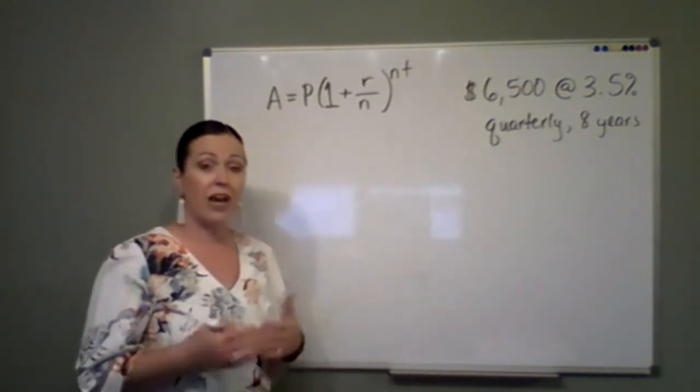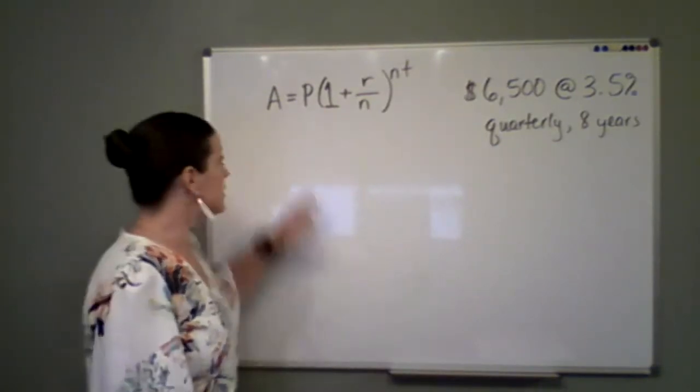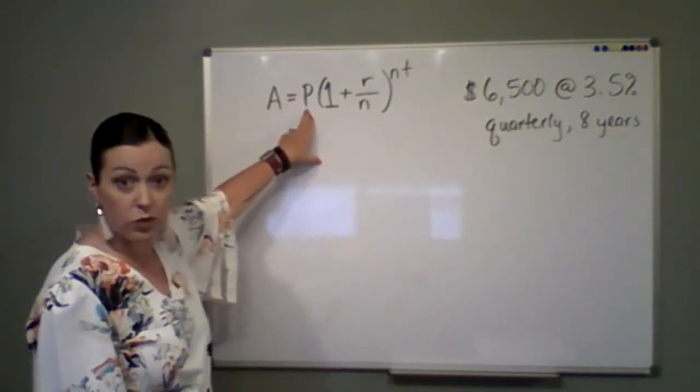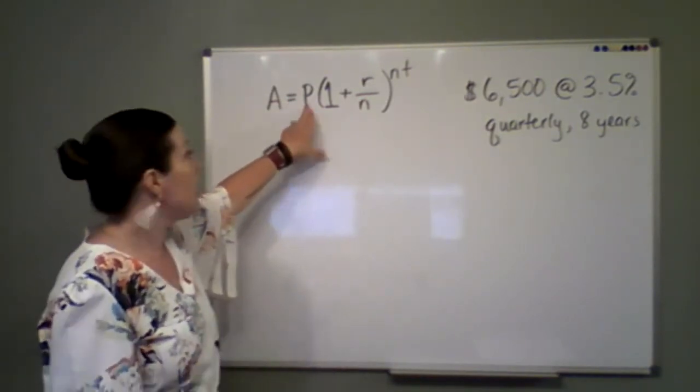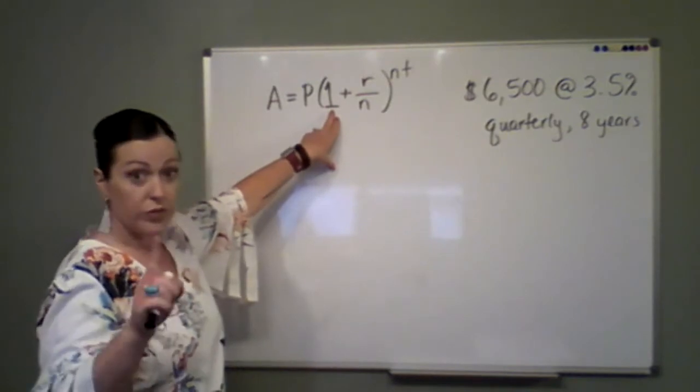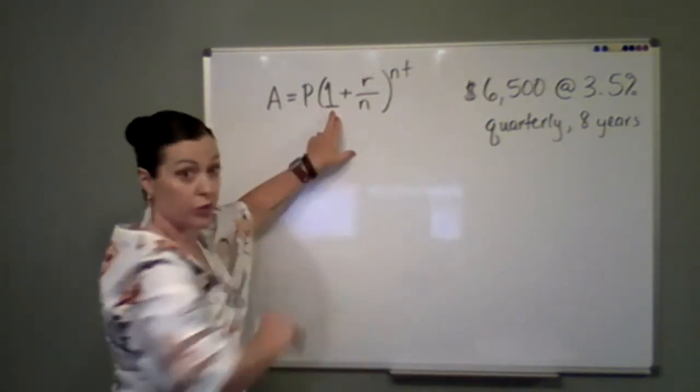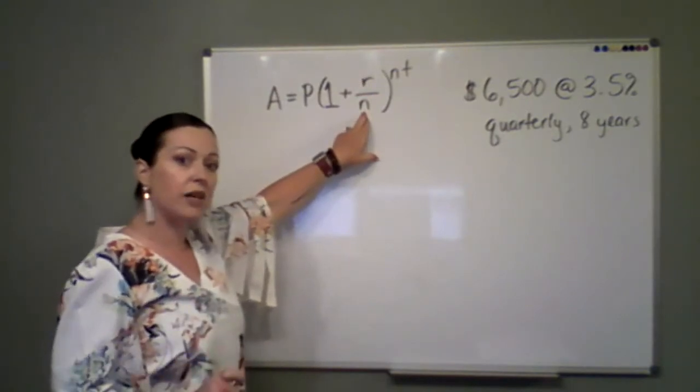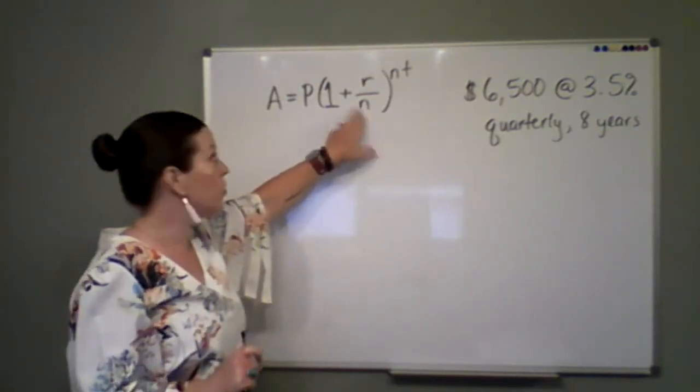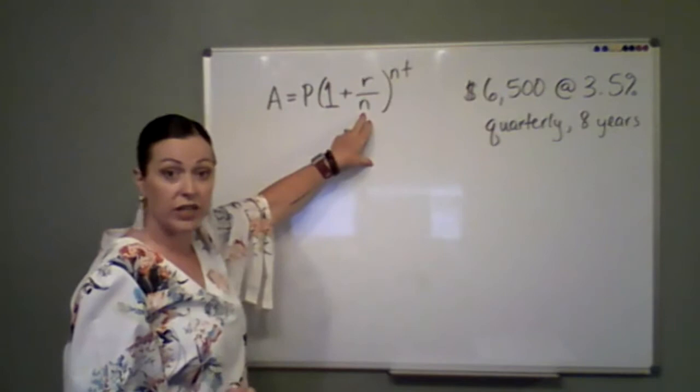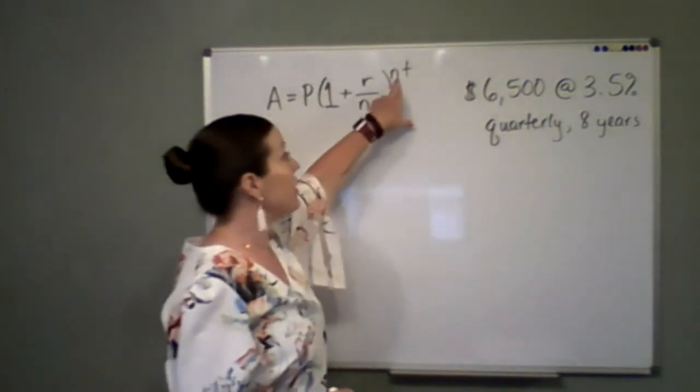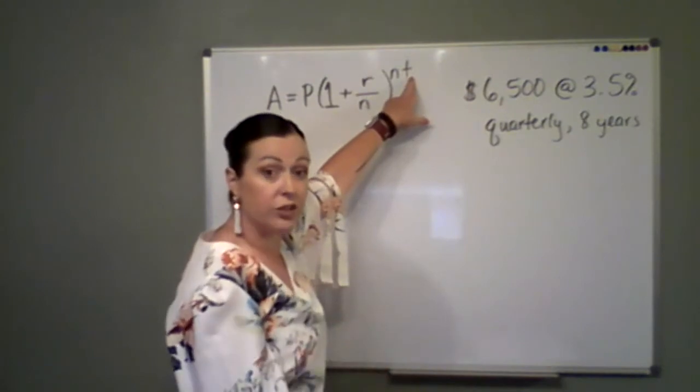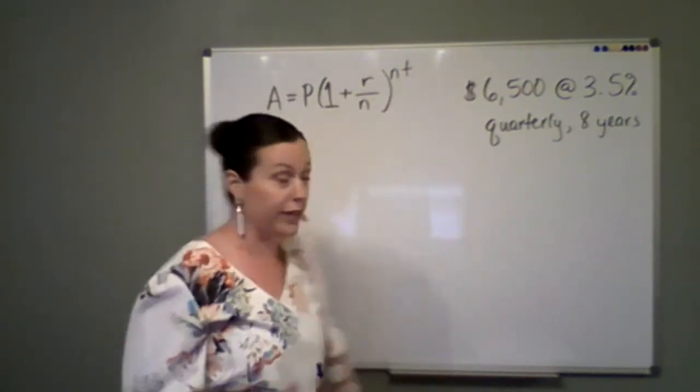So the format for calculating compound interest is the amount that you have or your balance is calculated by taking the principal, so your initial investment, and then one representing 100% of that principal plus the rate over the number of times that rate is calculated or the compound interest is calculated in a year. Then that number of times is calculated in a year times the number of years the interest is being calculated.